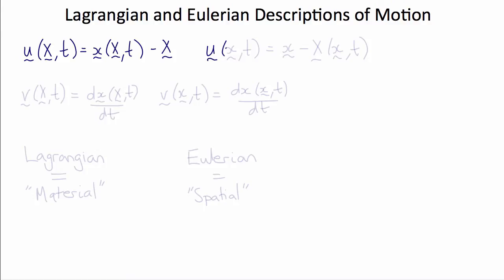An alternative, equally valid way of writing the displacement would be to use a spatial or Eulerian description of the motion, where u of little x and t is equal to little x minus big X of big X and t. This is a spatial description of the motion because now things are written as a function of the point in space, and different particles are occupying that point at different times.